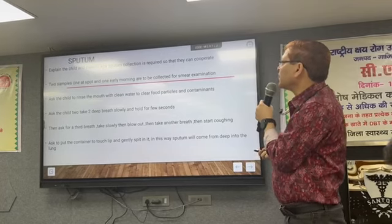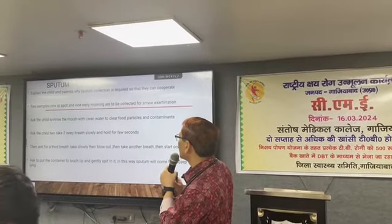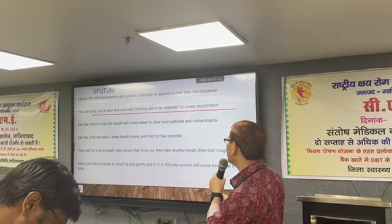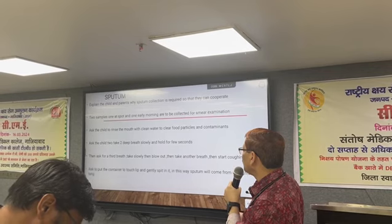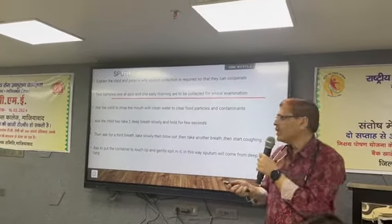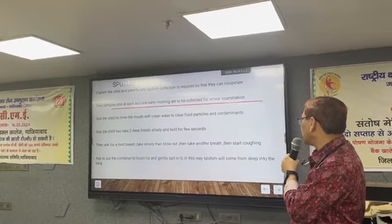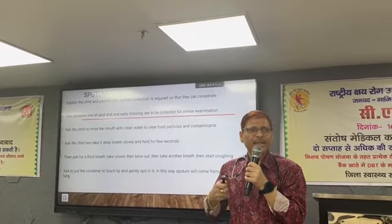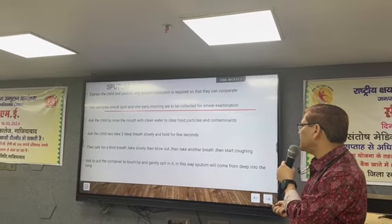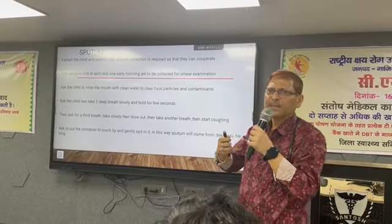For sputum collection, explain to the child and parents why it is required so they can cooperate. Collect two samples — one spot and one early morning — for smear examination. Ask the child to rinse the mouth with clean water to clear food particles and contaminants. Ask the child to take two deep breaths slowly, hold for a few seconds, then take a third breath, blow out, take another breath, and start coughing. Train the child — especially adolescents can perform this well. Ask the child to put the container to the lips and gently spit. This way sputum will come from deep in the lungs, otherwise the sample will be negative.